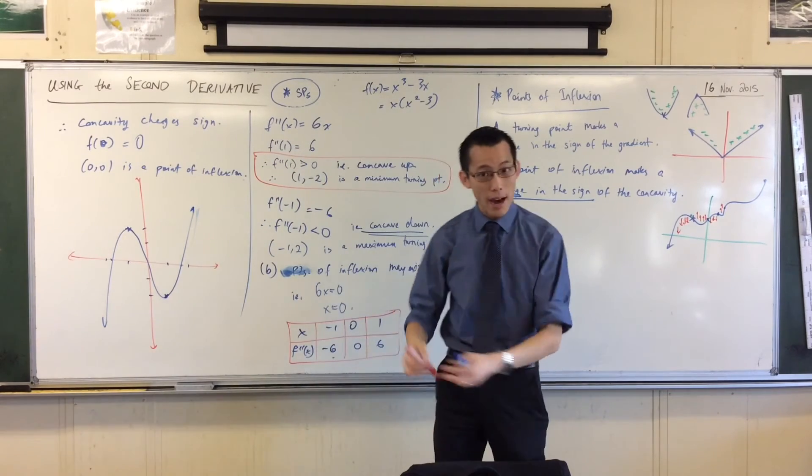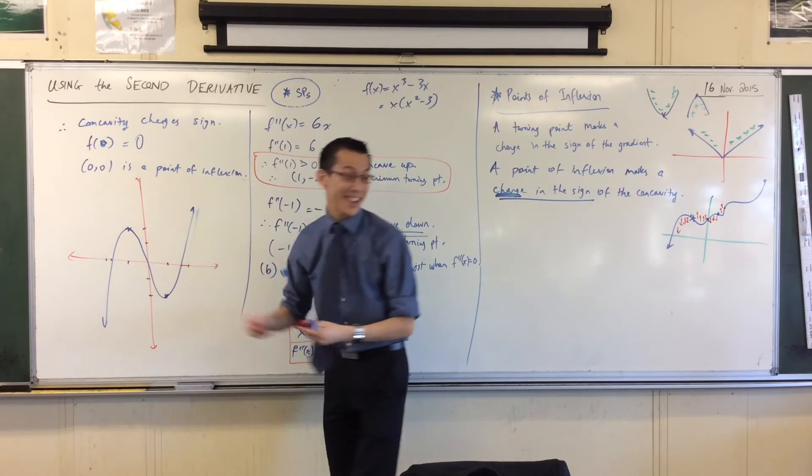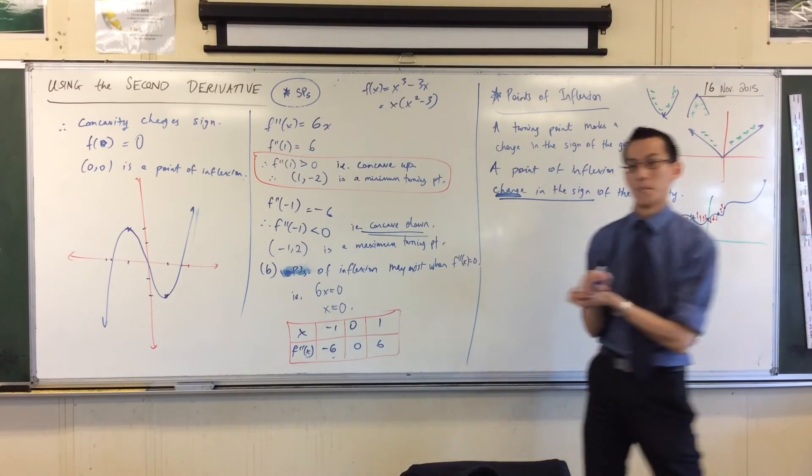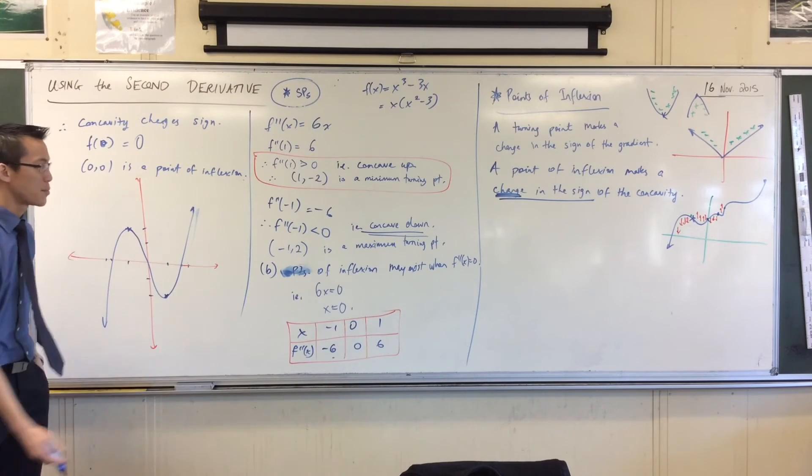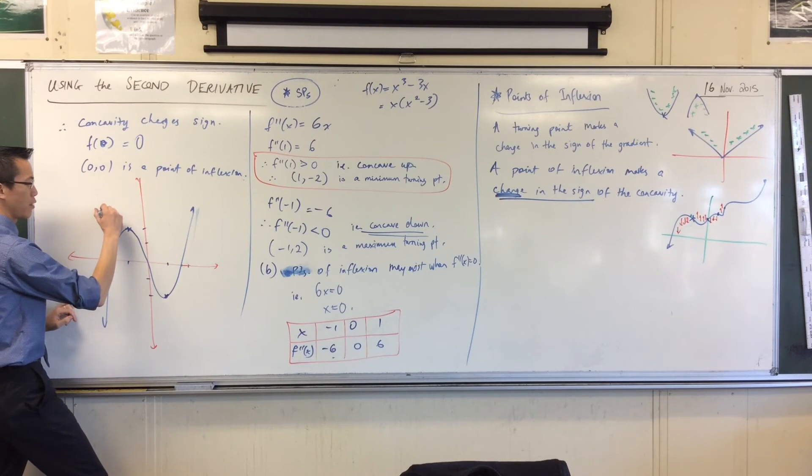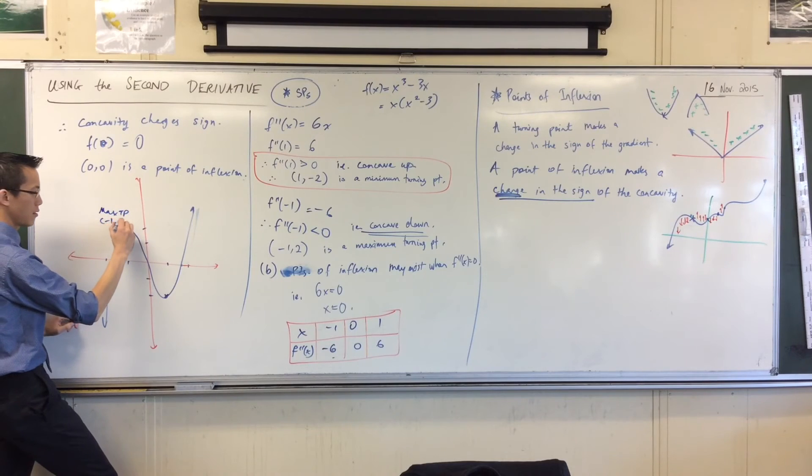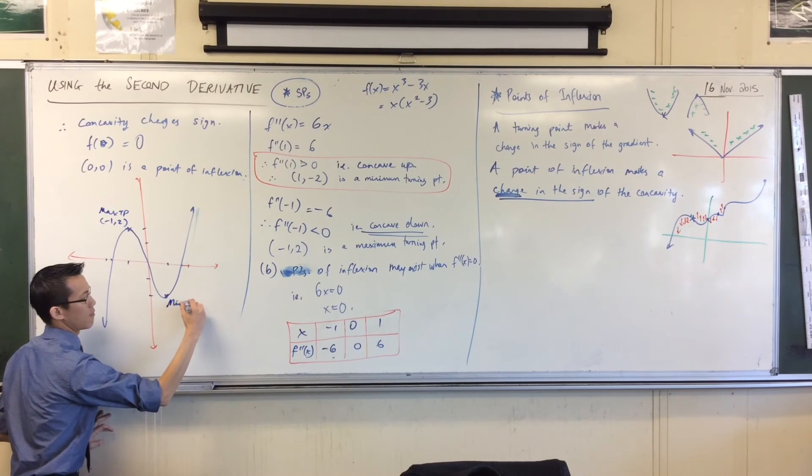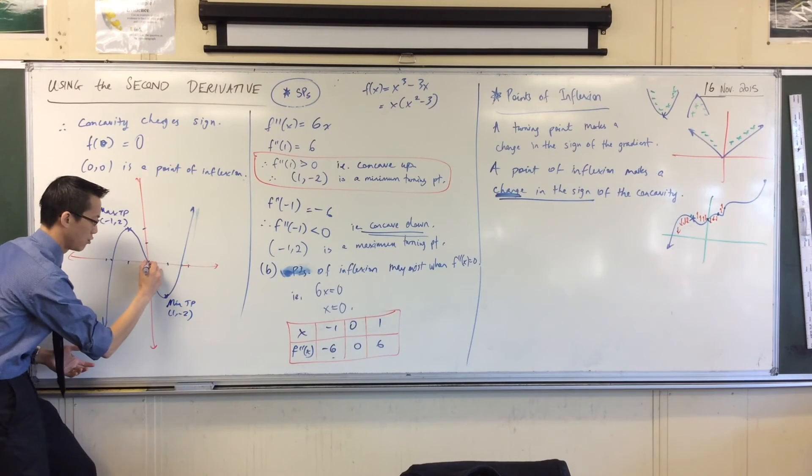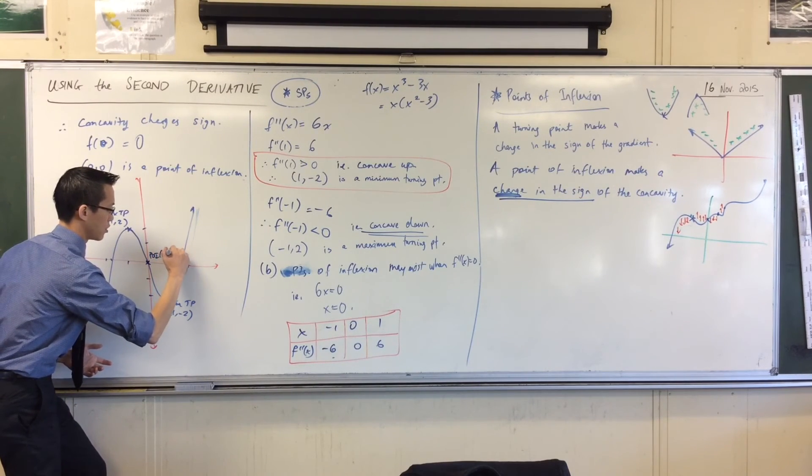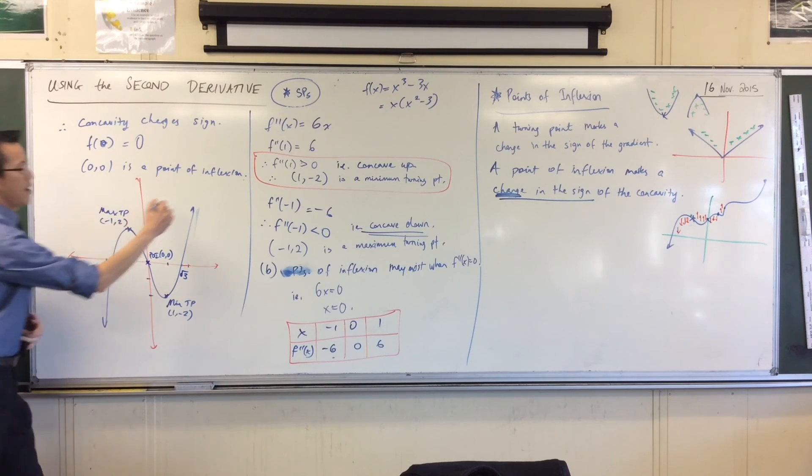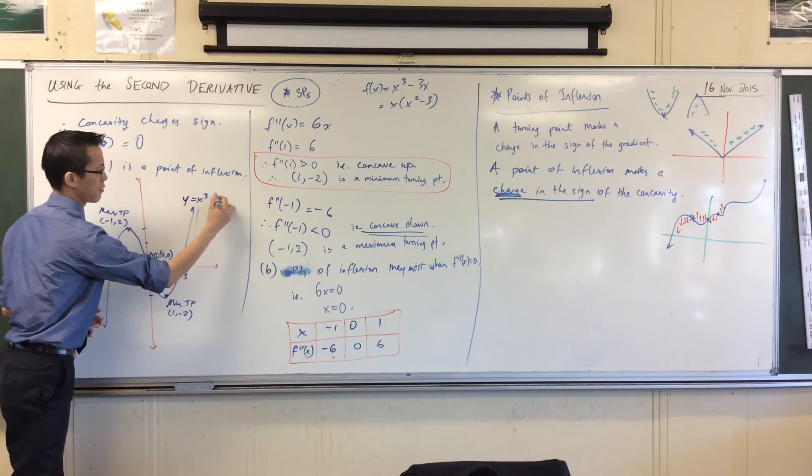Now, I'm almost there. It says sketch it, indicating all important features. When they say all important features, 99% of the time, they just mean tell me about all the stuff you just found. Just put it on there. So I've already got there's a max turning point there, and I'll write its coordinates. Here's my minimum, and its coordinates. You've found the point of inflection, so you should say point of inflection at the origin. And then you've got roots. So you've got root 3, you've got negative root 3. And then you can graph. Whoops. 3x. There you go.